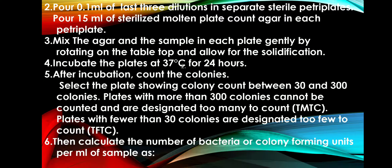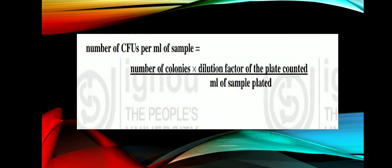After incubation, count the colonies. Select the plate showing a colony count between 30 to 300. Plates with more than 300 colonies cannot be counted and are designated as too many to count, i.e., TMTC. Plates with fewer than 30 colonies are designated too few to count, i.e., TFTC. Then calculate the number of bacteria or colony forming units per ml of sample as: number of colonies multiplied by the dilution factor of the plate counted, divided by ml of sample plated.